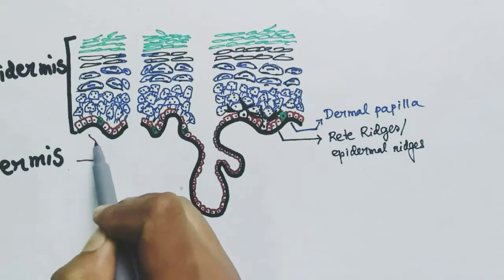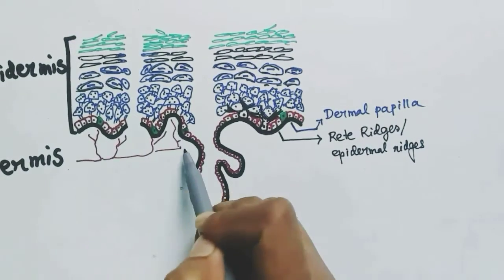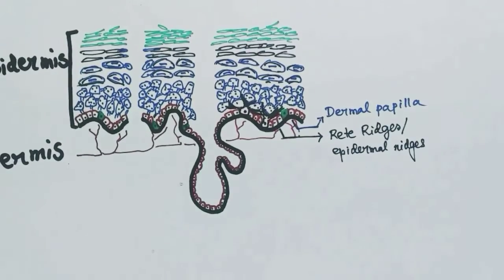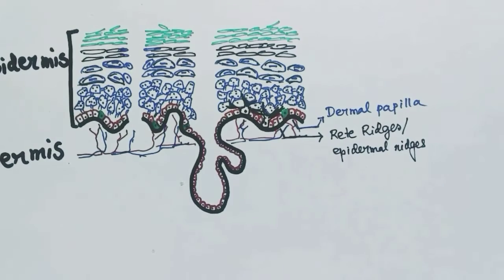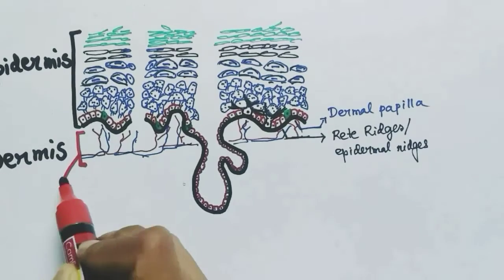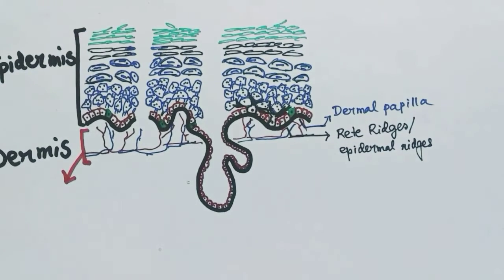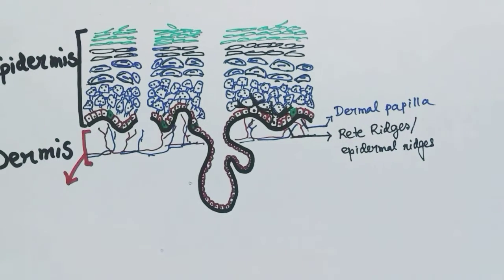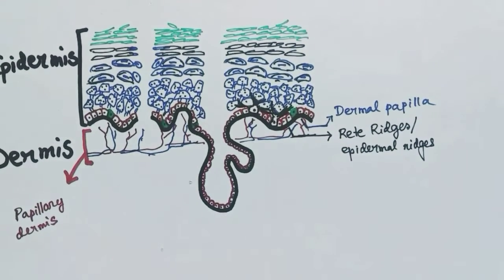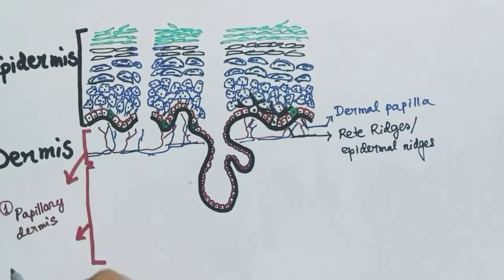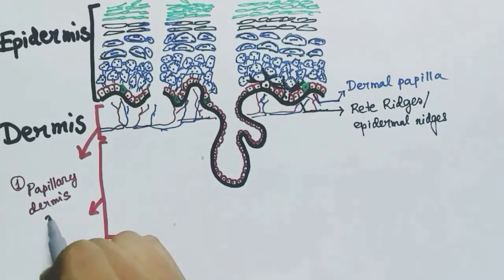The region of the dermis closest to the epidermis is called the papillary dermis. This region is highly vascular — it has blood supply which supplies the living epidermal cells. The deeper part of the dermis is called the reticular dermis.